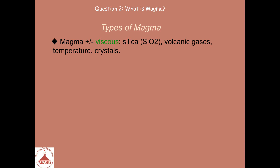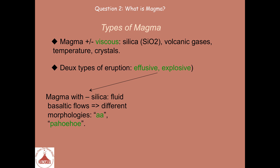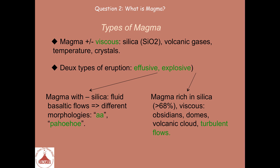Scientists have identified two categories of eruptions: effusive ones and explosive ones. Effusive eruptions occur when the magma is less rich in silica, less viscous, producing basaltic lava flows. The surface of these lava flows can have different morphologies. Well-known morphologies are A-A and Pahoehoe — these are Hawaiian names.